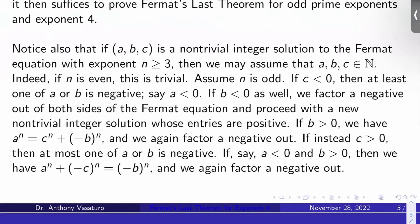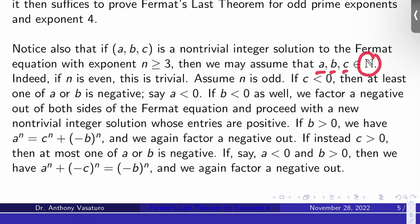Let's make another reduction. If ABC is a non-trivial integer solution to the Fermat equation with exponent n at least 3, we can actually assume that a, b, and c are positive integers, not just arbitrary non-zero integers. If n is even, this is a trivial statement, because if any of the entries are negative we can simply change their signs, and the even exponent will kill any negatives that show up as a result.